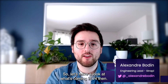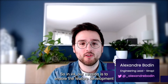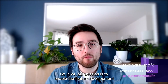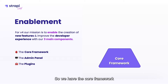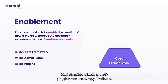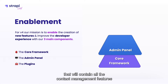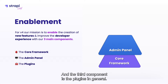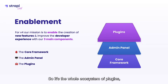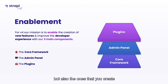Let's have a look at what's coming in v4. Our mission is to enable feature development and also to improve the developer experience with our three main components. We have the core framework that enables building new plugins and new applications. We've got the admin panel that will contain all the content management features such as versioning, collaboration workflow, or even the publication workflow. And the third component is the plugins in general — the whole ecosystem of plugins, the ones that Strapi maintains but also the ones that you create and that contribute to building a great community.